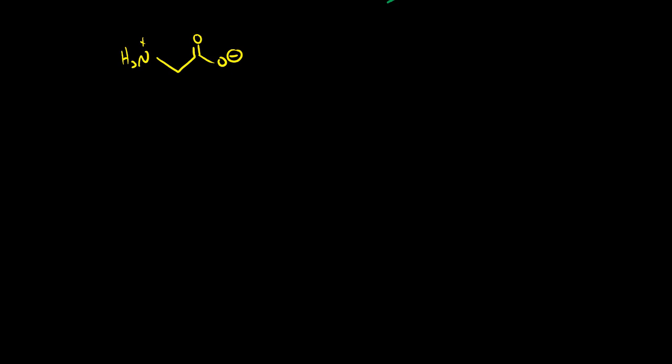But as it turns out there are 20 different common amino acids that we have in our bodies and pretty much every organism has in their bodies. So the difference is what's attached to the alpha carbon. We call this the R group or the side chain. The only thing that's different between the 20 amino acids is what's attached to the alpha carbon. So side chain chemistry is important.